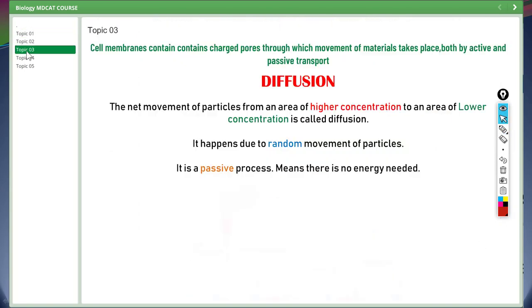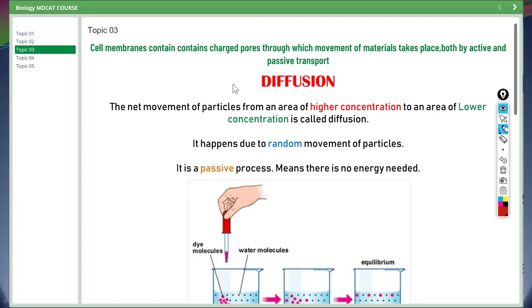We have some basic terms related to transportation across cell membrane. We will be discussing only few important which are mentioned in MDCAT syllabus. Cell membranes contain charged pores through which movement of materials takes place, both by active and passive transport. First one is diffusion which is defined as the net movement of particles from an area of higher concentration to an area of lower concentration. It happens due to random movement of particles. It is a passive process. Means there is no energy needed.